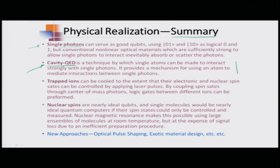Trapped ions can be cooled to the extent that their electronic and nuclear spin states can be controlled by applying laser pulses. By coupling spin states through center-of-mass phonons, logic gates between different ions can be performed. Nuclear spins are nearly ideal qubits, and single molecules with controllable spin states would be nearly ideal quantum computers.